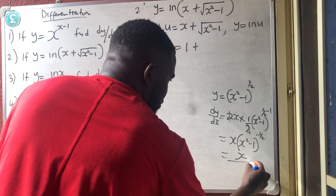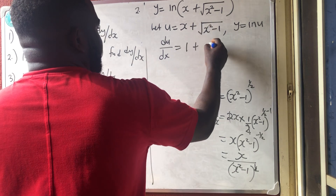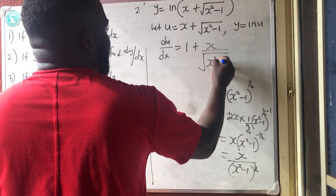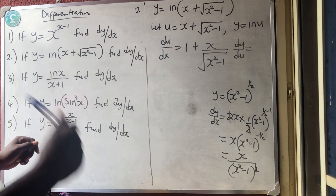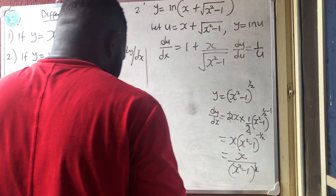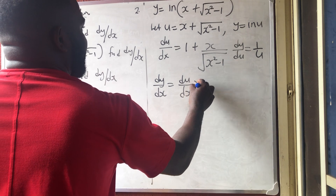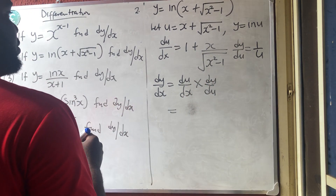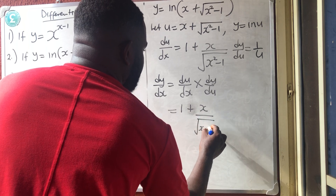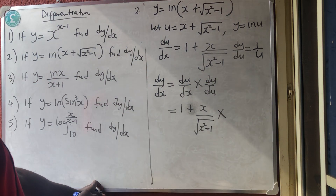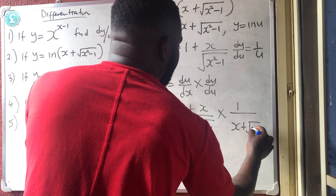Now dy/du equals 1/u. By chain rule, dy/dx equals du/dx times dy/du, which is [1 + x/√(x²−1)] times 1/u. Here u equals x plus √(x²−1). Multiplying these together and simplifying the fraction — the numerator becomes √(x²−1) plus x, which cancels with the denominator u.